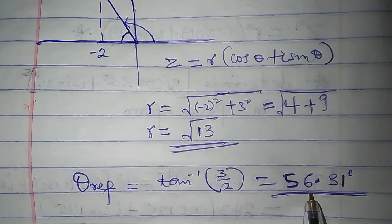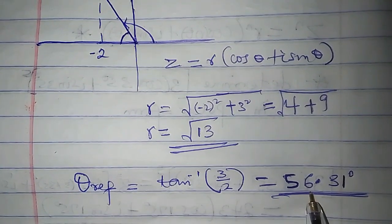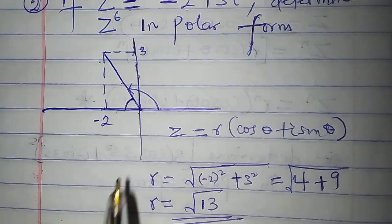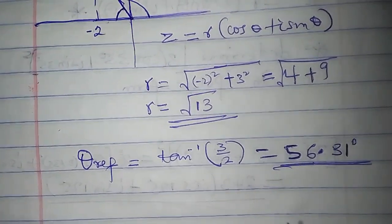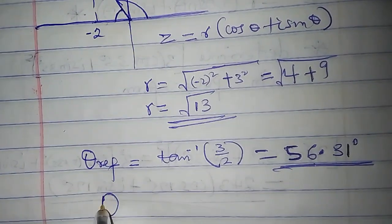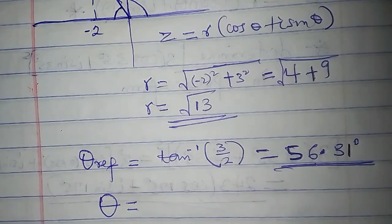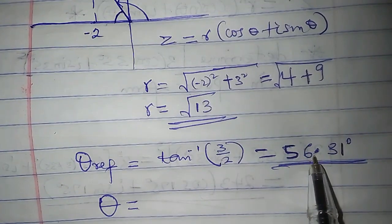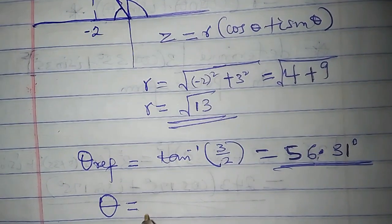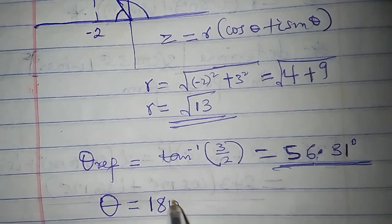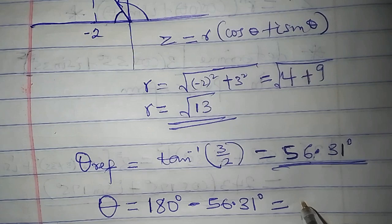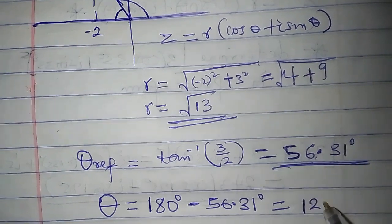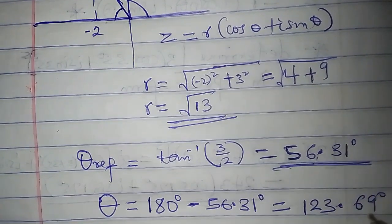This particular reference angle is an angle in the first quadrant, and our complex number is in the second quadrant. So to obtain the argument in the second quadrant, which is theta, we have to subtract this from 180. That will be 180 degrees minus 56.31 degrees, which is equal to 123.69 degrees.